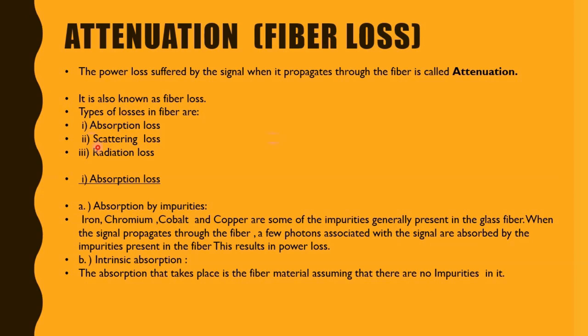Absorption loss: impurities such as iron, chromium, cobalt, and copper are present in the fiber. When the signal propagates through the fiber, a few photons associated with the signal are absorbed by these impurities, resulting in power loss. This is called extrinsic absorption. Intrinsic absorption occurs in the fiber material itself, assuming there are no impurities — absorption takes place within the pure fiber material.